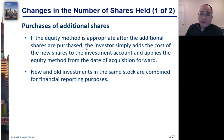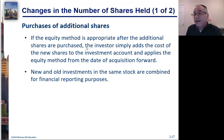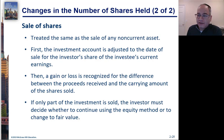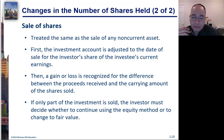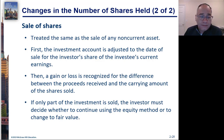If you buy more shares, the cost is simply added to the investment account, and any additional income is prorated based on how many shares you held on different dates. If you sell shares, you credit the investment account prorated for the shares sold, and record a gain or loss based on the number of shares sold and the proceeds received. It's possible that selling shares causes you to lose significant influence, and therefore you'd stop using the equity method and return to fair value accounting.